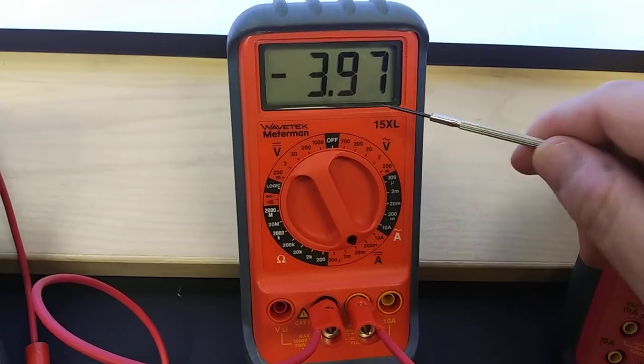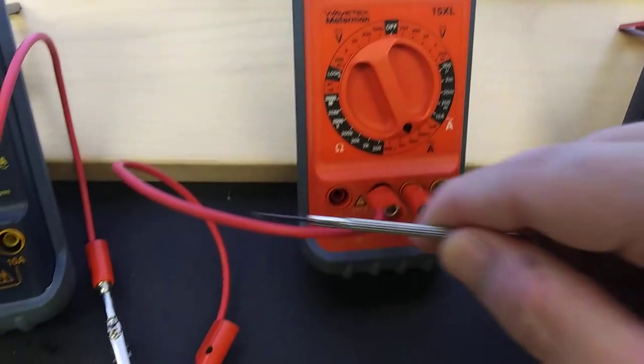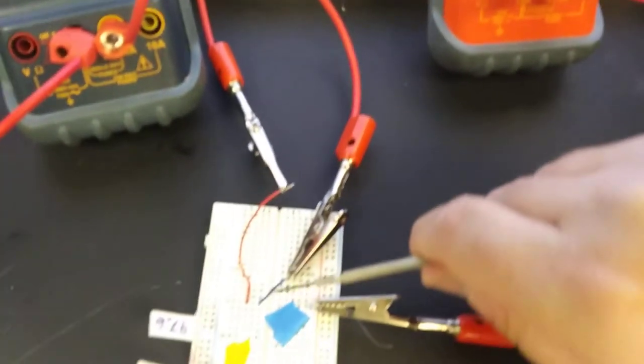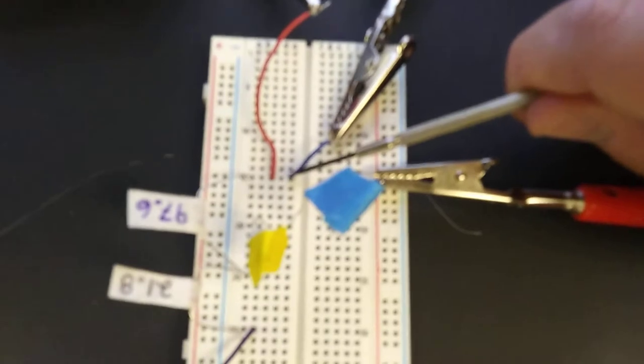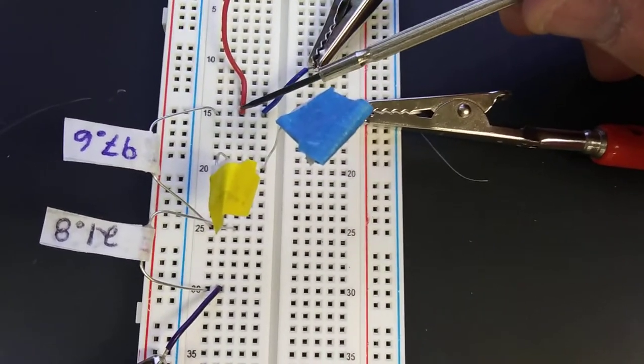Notice the dial setting, notice the reading. Ignore the minus sign from this DMM. Right to here, into line 15. From line 15, there's the other leg of the old 97.6.